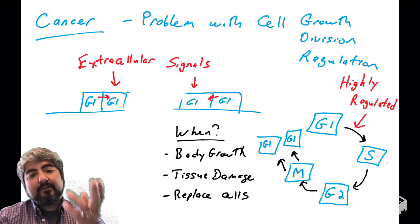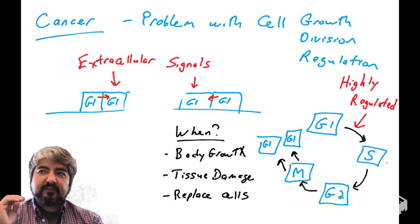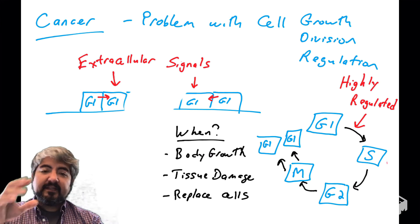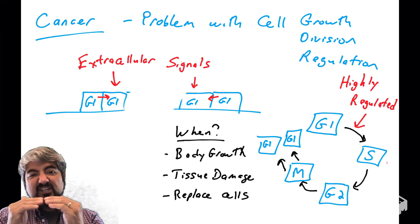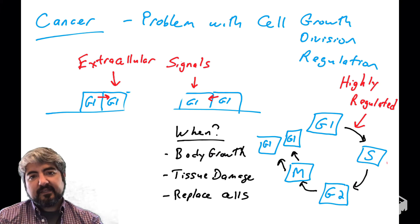So these signals are outside the cell, and they will tell the cell to go through the cell cycle. So if they're coming from outside the cell, either soluble or cells touching other cells through protein-protein contacts, these are extracellular signals, signals coming from outside the cell, telling it it should go through the cell cycle.